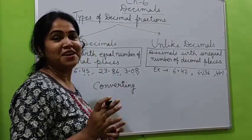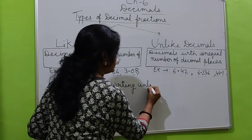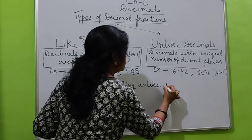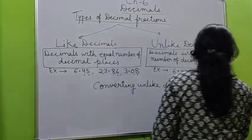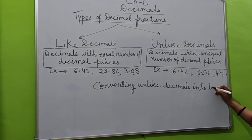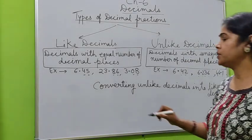And we call it as like fraction when the decimal places are same. Number of digits in decimal places are same. Now I will explain you converting unlike decimals into like decimals.